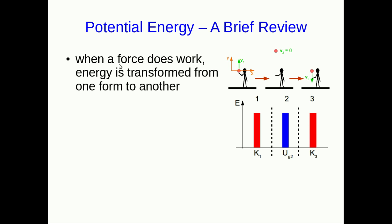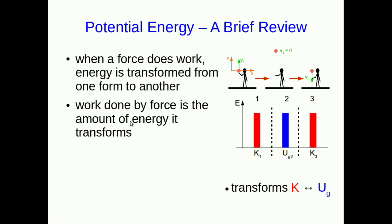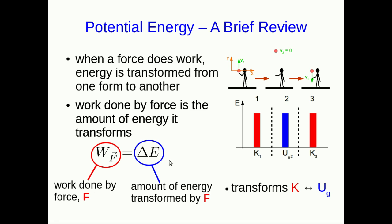This is because there's a force acting on the ball, the gravitational force or weight. Whenever a force does work, that results in a transformation of energy, and the amount of energy transformed is equal to the work done by the force. This W sub F is the work done by some force F, and this delta E is some amount of energy that's been transformed as a result of that force doing work.